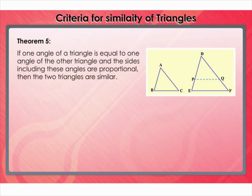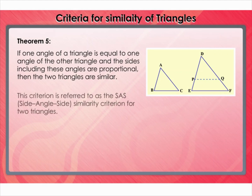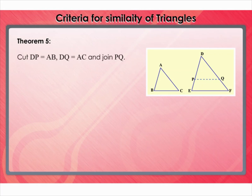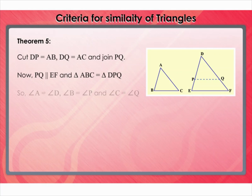Every time we find that triangles are similar, it is due to the next criterion: if one angle of a triangle is equal to one angle of the other triangle, and the sides including these angles are proportional, then the two triangles are similar. This criterion is referred to as the SAS (side-angle-side) similarity criterion for two triangles. This theorem can be proved by taking two triangles ABC and DEF such that AB/DE equals AC/DF, less than 1, and angle A equals angle D. Cut DP equal to AB, DQ equal to AC, and join PQ. Now PQ is parallel to EF and triangle ABC is congruent to triangle DPQ, so angle A equals angle D, angle B equals angle P, angle C equals angle Q. Therefore, triangle ABC is similar to triangle DEF.